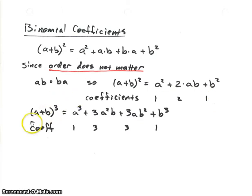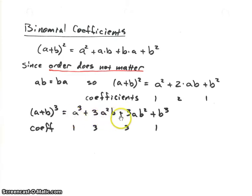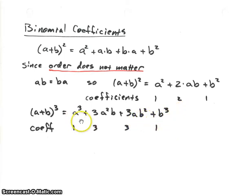If we go to A plus B cubed, we can work this out, and we know that we're going to end up with A cubed, plus 3A squared times B, plus 3A times B squared, plus B cubed. And if we look at the coefficients, we have 1, 3, 3, 1.